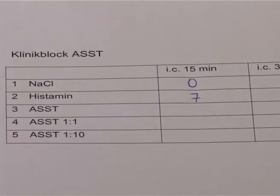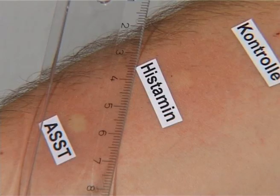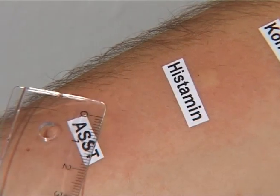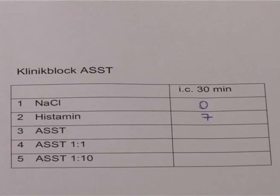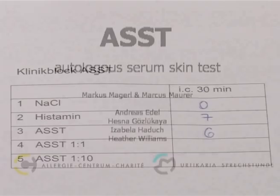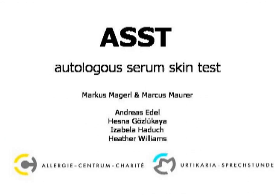In order to be assessed as positive, the reaction to the serum must be 2 mm larger than the reaction to the negative control. That is clearly the case here. As can be seen, the ASST is a quick, easy, and inexpensive test to perform. It is the test of choice to diagnose autoreactive urticaria.